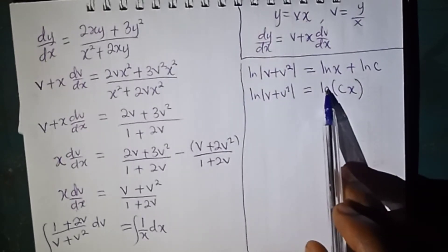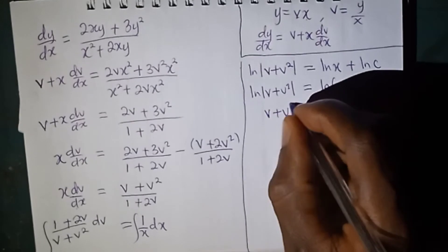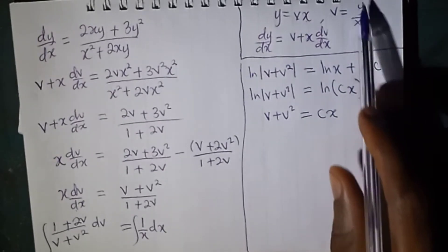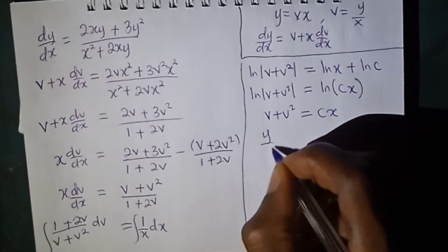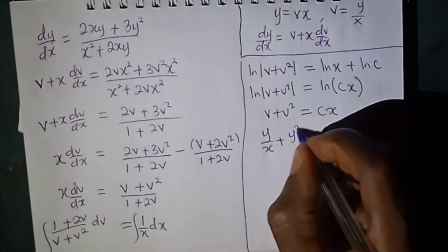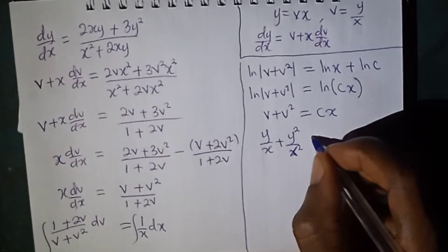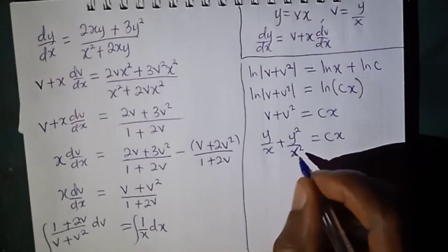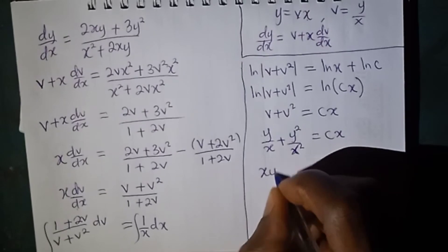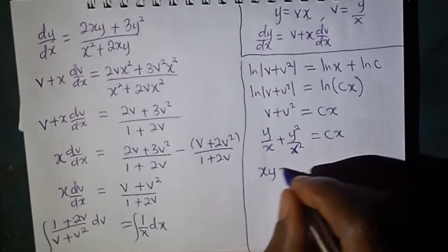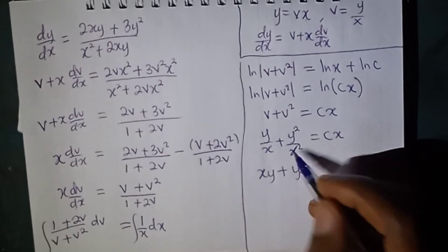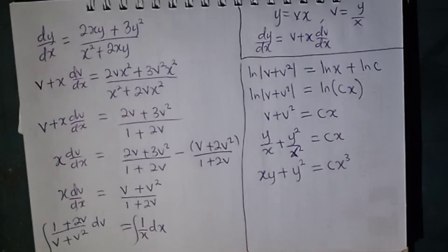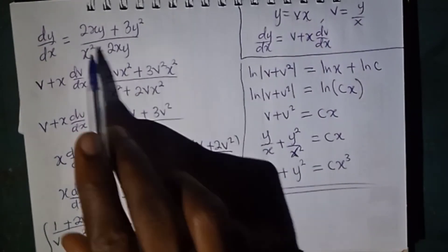So the natural log of v plus v squared equals the natural log of cx. The logs cancel, and v plus v squared equals cx. But remember, v is equal to y over x. So we have y over x plus y squared over x squared equals cx. To clear the fractions, we multiply each term by x squared, giving xy plus y squared equals cx cubed, since x squared times x is x cubed. Hence, this is the solution for our homogeneous differential equation.